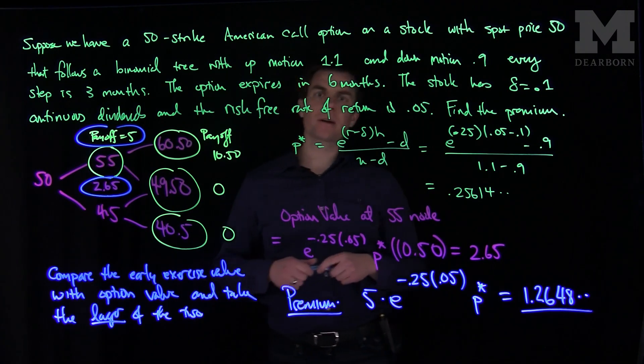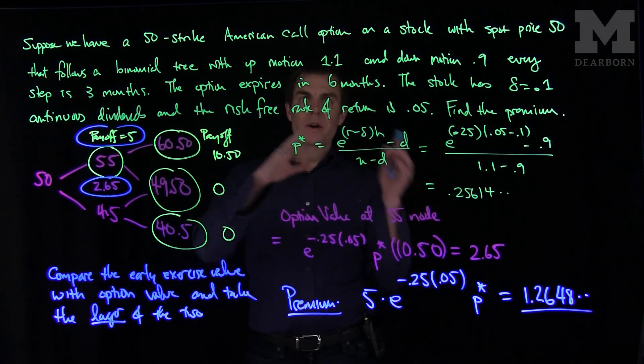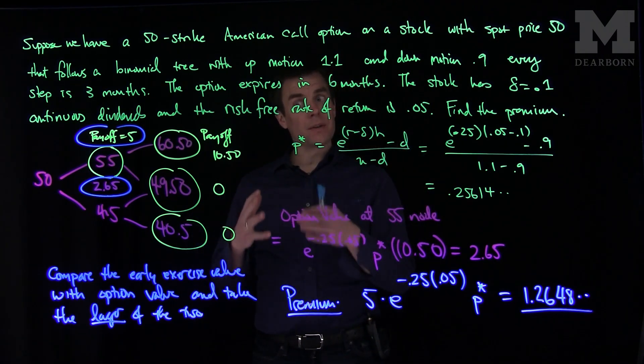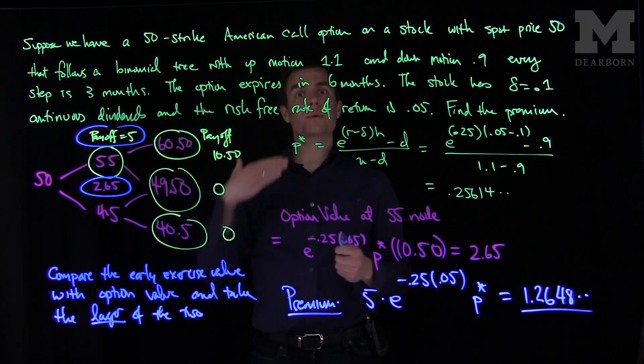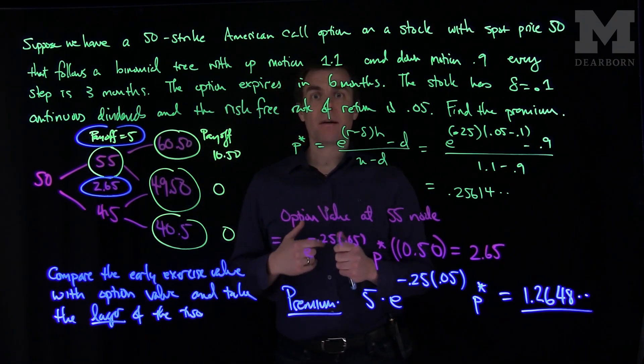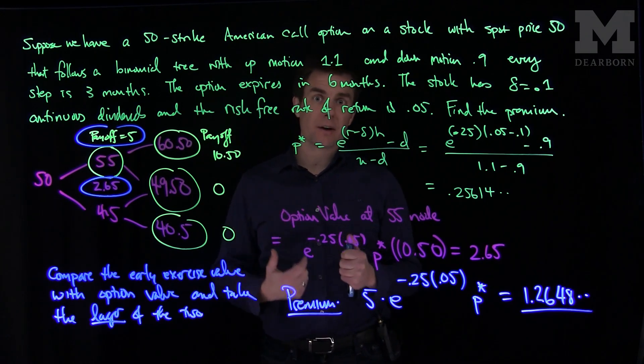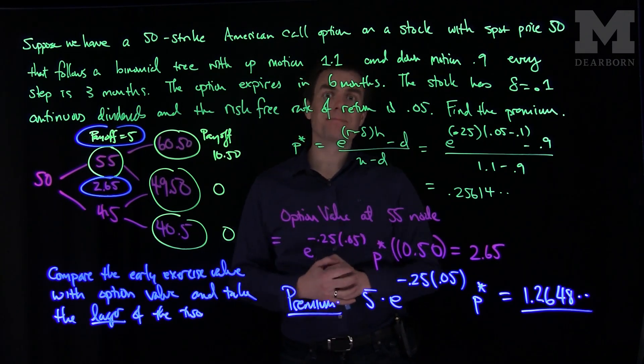This is the premium of the option. In computing the premium of American options, you would do the ordinary value of the options at every node in the tree, and then you compare those with the early exercise value of the option and choose the larger values, then use that to update your pricing scheme. Thank you very much.